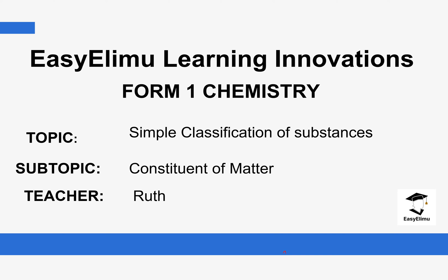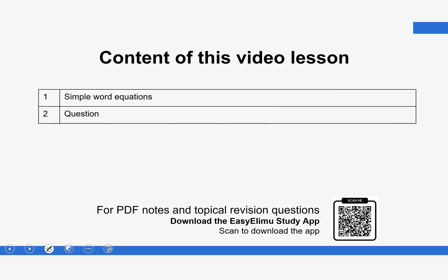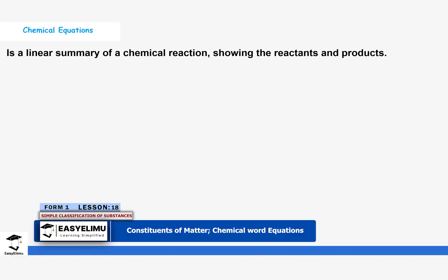You can go and watch that lesson before we begin. We looked at different chemical symbols derived from both English and Latin. You also saw that some chemical symbols begin with the first letter while others have two letters. The first letter will always be in capital while the second letter is in small. Today we are going to look at simple word equations and then do a few questions in regards to what we discuss. We will start with what a chemical equation is.